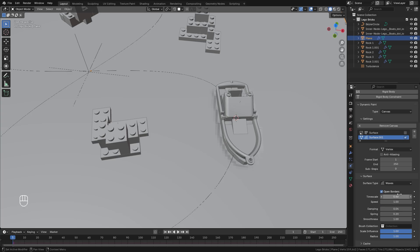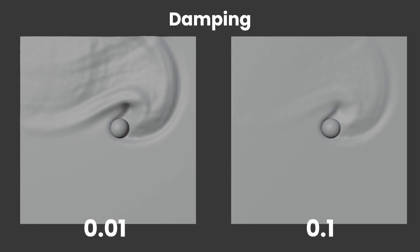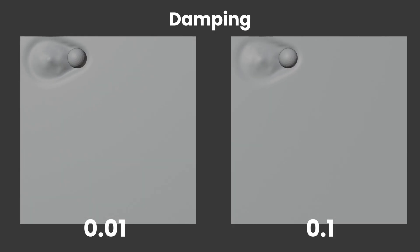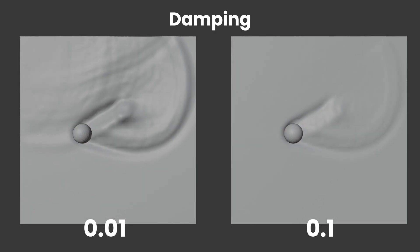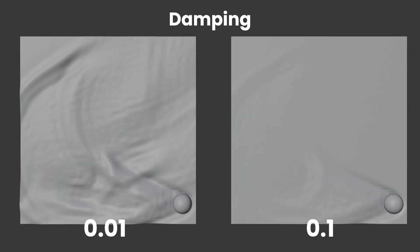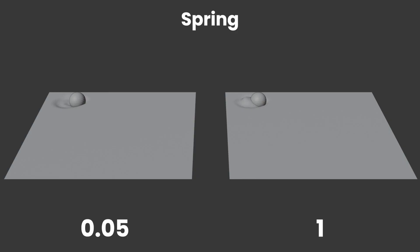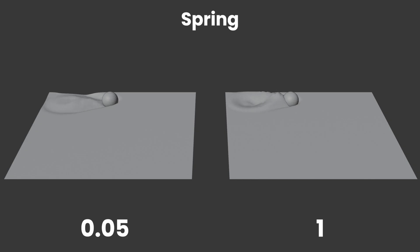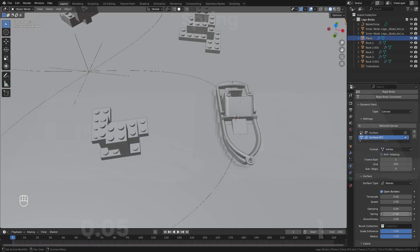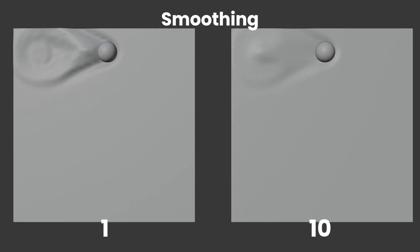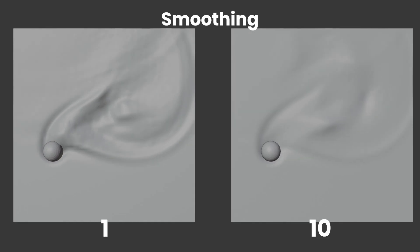For the Time Scale we're going to go down to 0.6. The Dampening value controls how fast the waves dampen from moving all the way down to zero movement — higher values will result in dampening faster and lower values will allow the waves to last a little bit longer. I'm going to leave that at the default value. The Spring option allows the springiness of the waves to be higher or lower. For this animation I'm going to go up to around 0.4. The Smoothness obviously smooths out the waves and I'm going to bring this up to around 1.5.